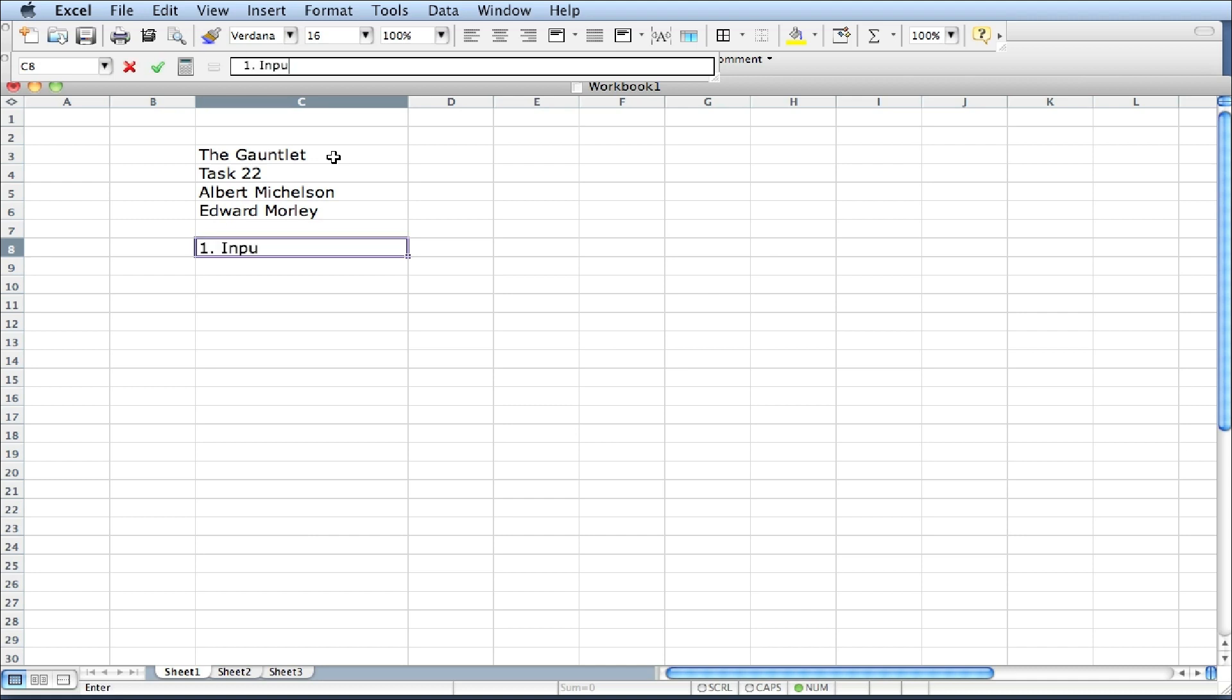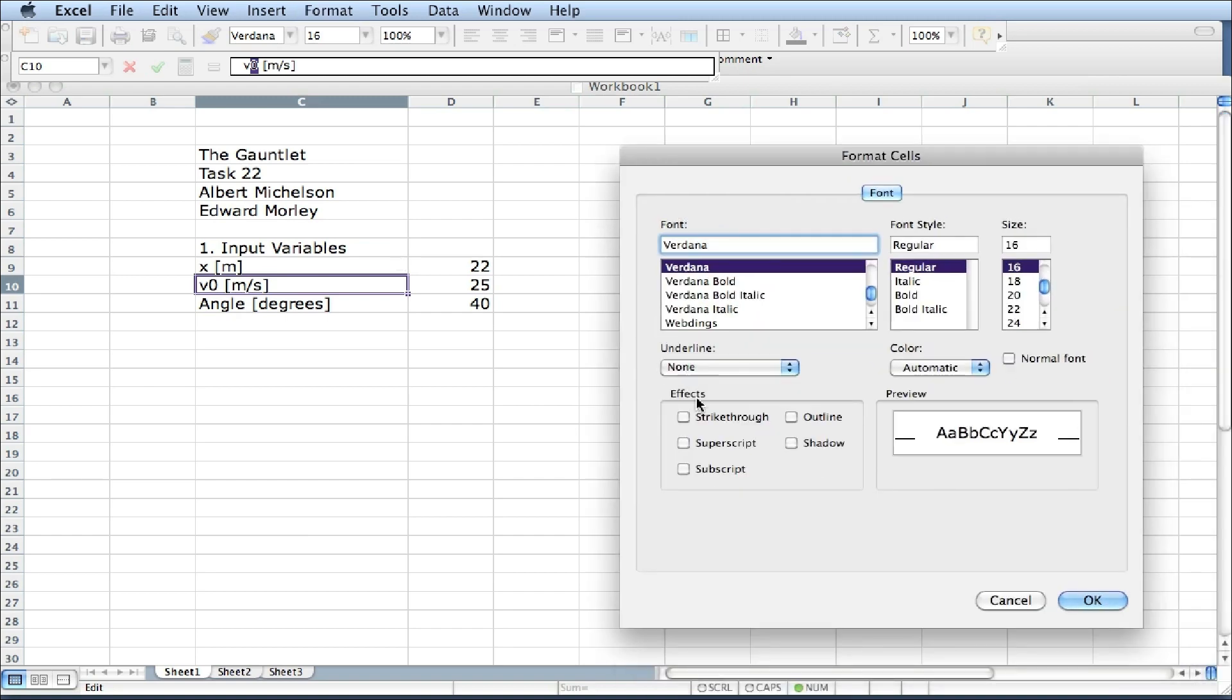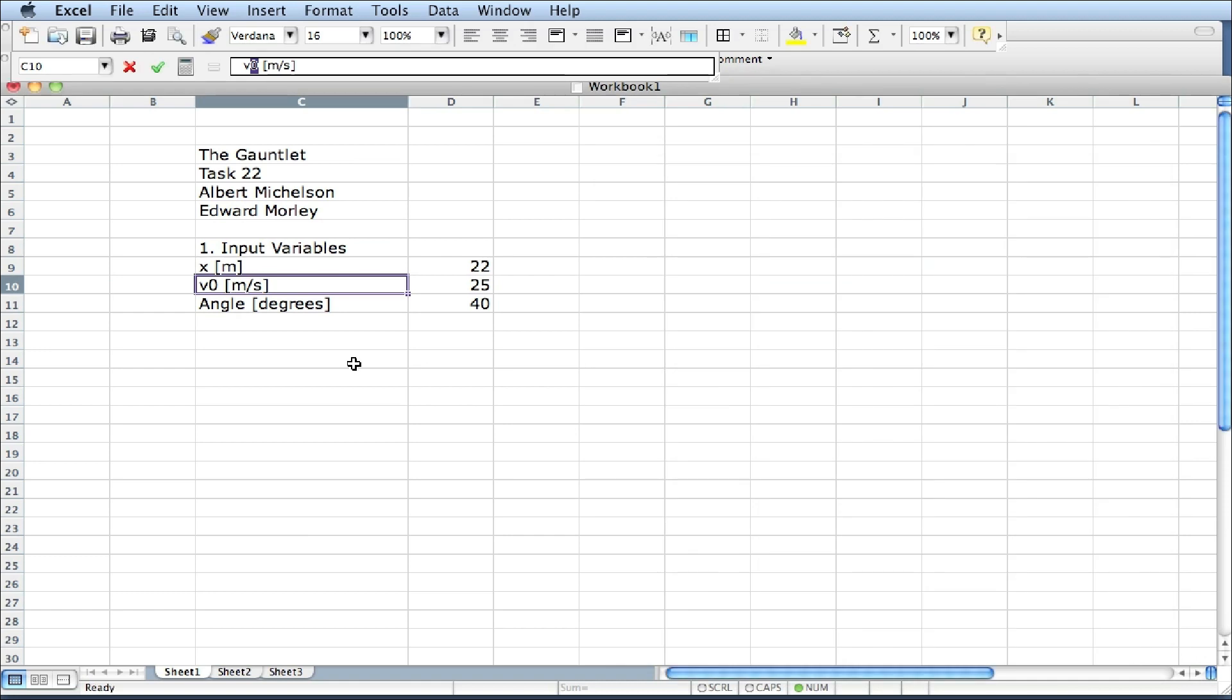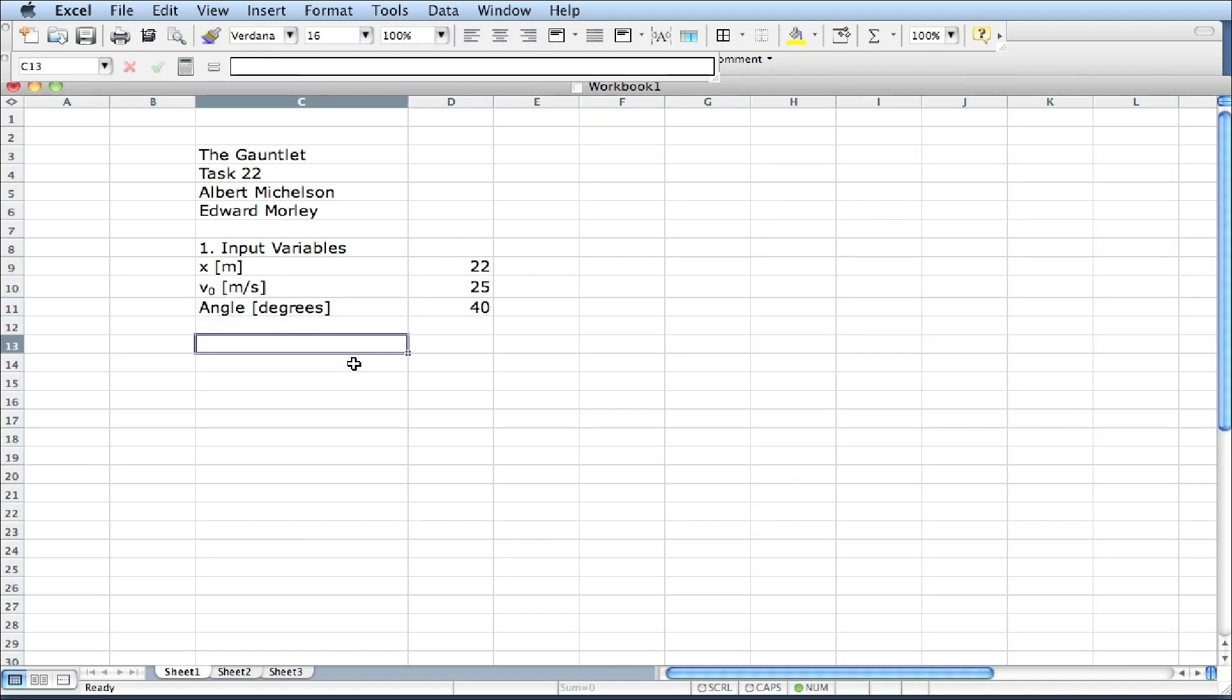The first part is the input section, or the input variables. And it was the value of x in meters, the initial velocity in meters per second, and the angle in degrees. This was 22, the initial velocity was 25, and the angle was 40. And we can make this a subscript. Format cells. I'm going to say subscript here for the initial velocity v0. So those are the input variables.